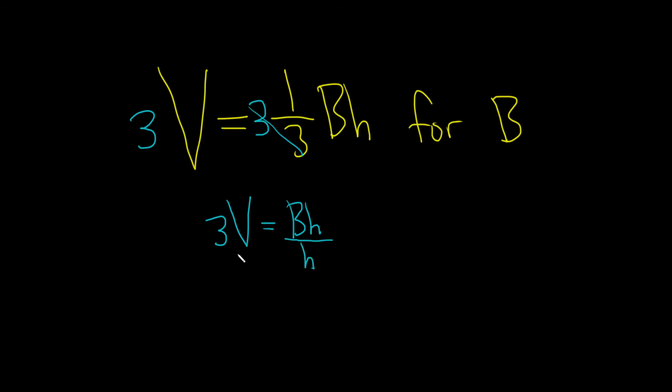But what you do to one side, you do to the other. So you draw a line, and you put an h here. So these go away. So we have 3v all being divided by h, and that's equal to b.